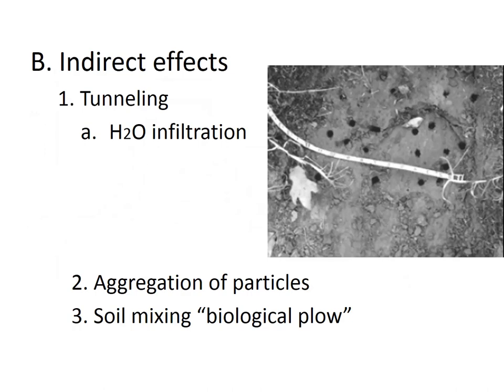The indirect effects of fauna come from their ability to perform tunneling, which improves water infiltration, aggregates soil particles, and mixes the soil — functioning like biological plowing. These indirect effects are very important for agricultural practices as well.